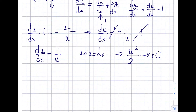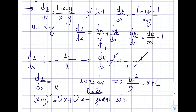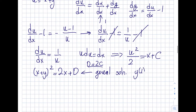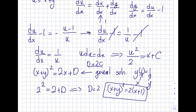Substituting back u = x + y: (x + y)² equals 2x + D, where D = 2C, as the general solution. Applying the initial condition y(1) = 1: (1 + 1)² = 2(1) + D gives 4 = 2 + D, so D = 2. The particular solution is (x + y)² equals 2x + 2, or 2(x + 1).